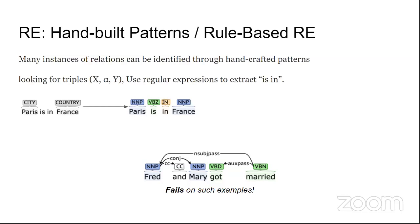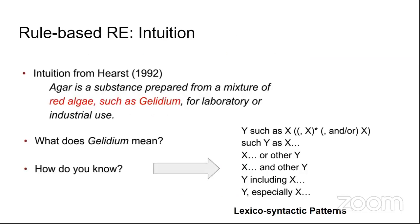The major problem with rule-based approaches is that you cannot code all the rules — there are too many and they are domain-dependent. Patterns that work for the medical domain would fail in agriculture or entertainment. The example 'Fred and Mary got married' would likely fail under a regex-based rule approach. This is where lexico-syntactic patterns come in: word-structure-based patterns like 'Y such as X,' 'Y as X,' 'X and Y,' or 'Y including X.'